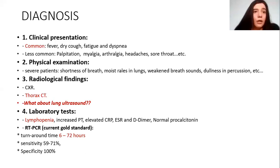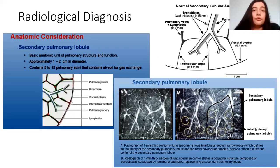To talk about radiological diagnosis, we will start with anatomy. The basic anatomy is the pulmonary lobule, which is the pulmonary structure and functional unit. It is approximately one to two centimeters in diameter and contains five to fifteen pulmonary acini that contain alveoli for gas exchange.